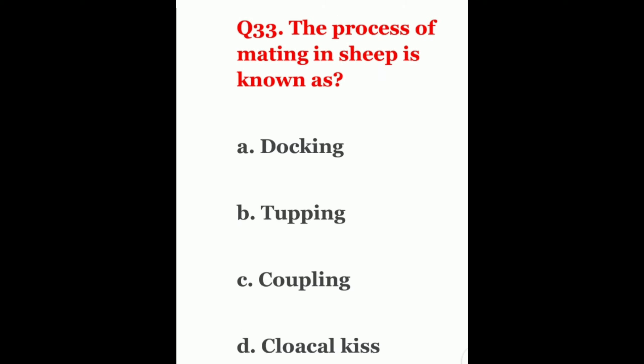Question 33. The process of mating in sheep is known as? The options are docking, tupping, coupling, or cloacal kiss. The correct answer is tupping.